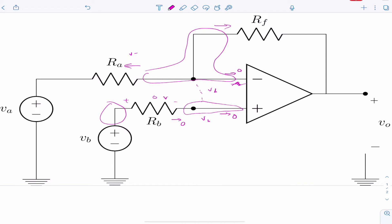we have Vb minus Va over Ra. And this other current up here, Vb minus Vo over Rf, actually.